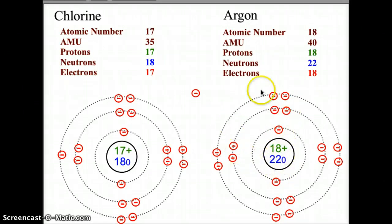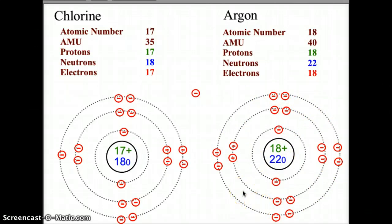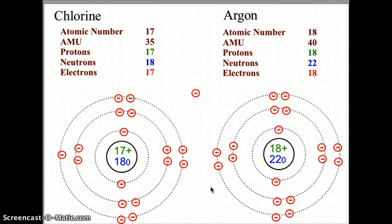Like neon, argon is completely filled in its outer shell, fulfilling the rule of octet. Hopefully this was a good way to work through the Bohr model for atoms, and I hope this will help you as you continue to explore the atom and atomic chemistry. Thank you.